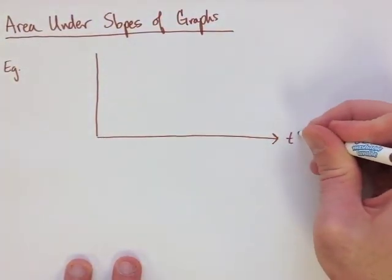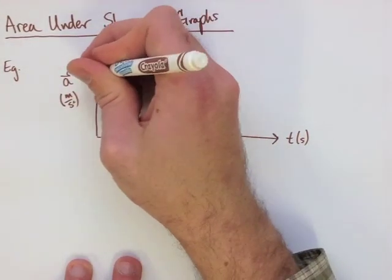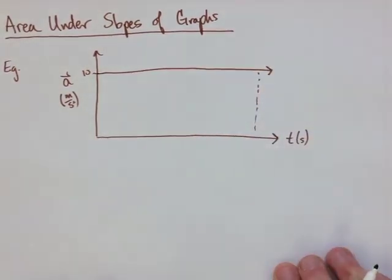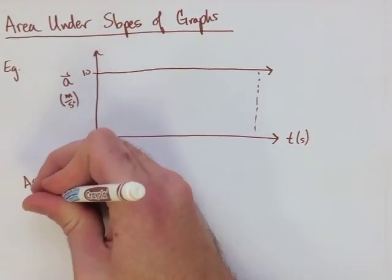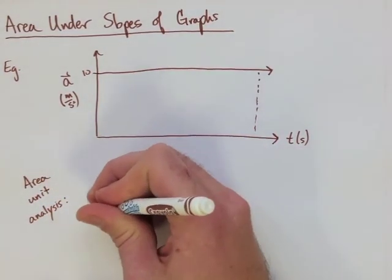To start with our acceleration-time graph, we're going to have a constant acceleration, so a straight line horizontally. When we look at this, we're going to create a box, meaning that we're taking the acceleration from the starting point to a certain time.